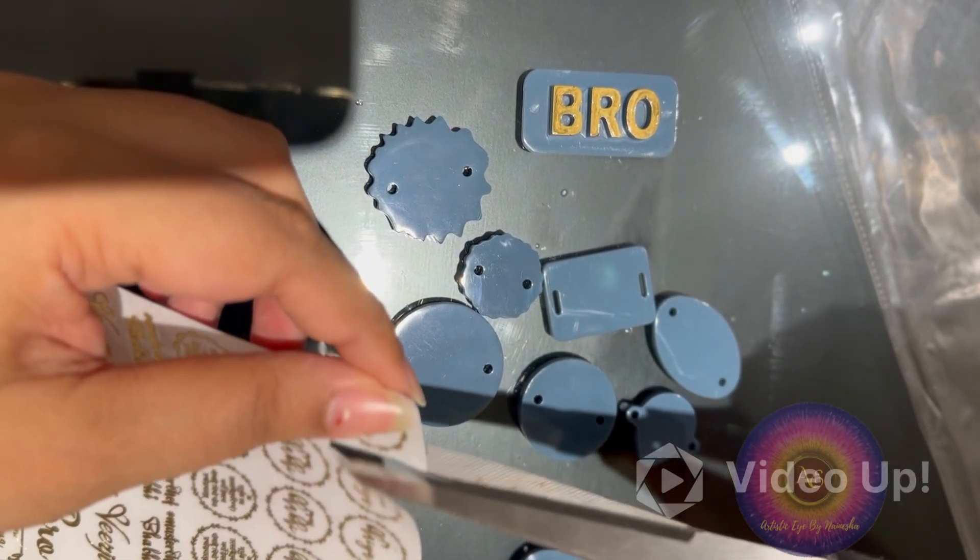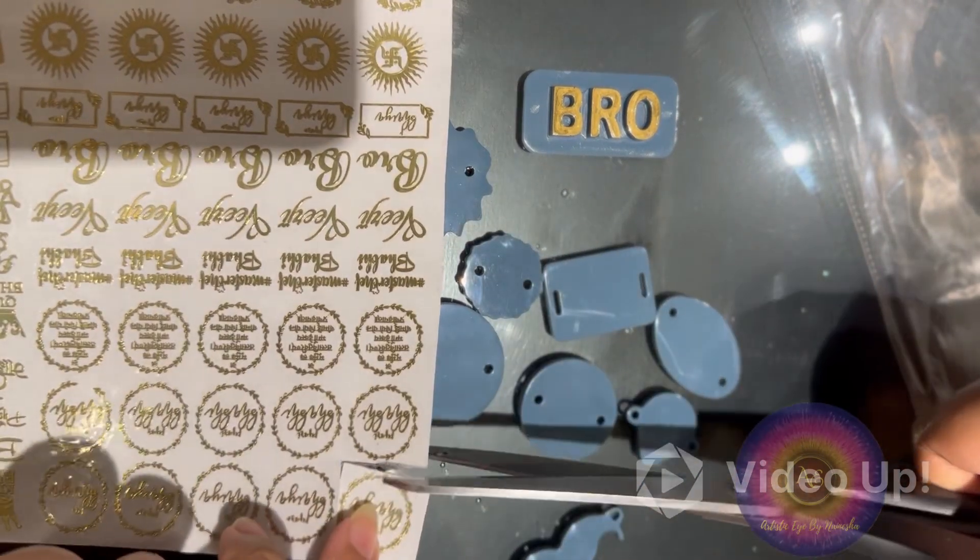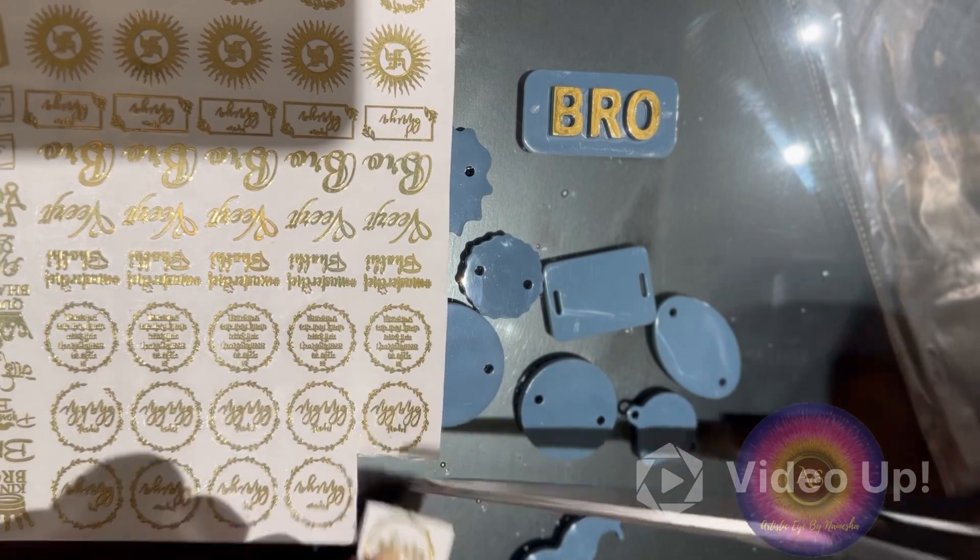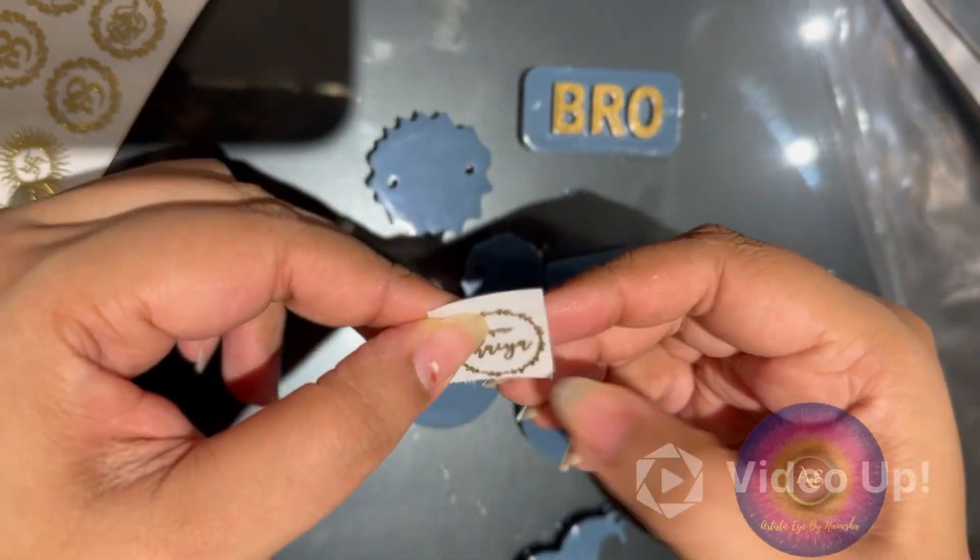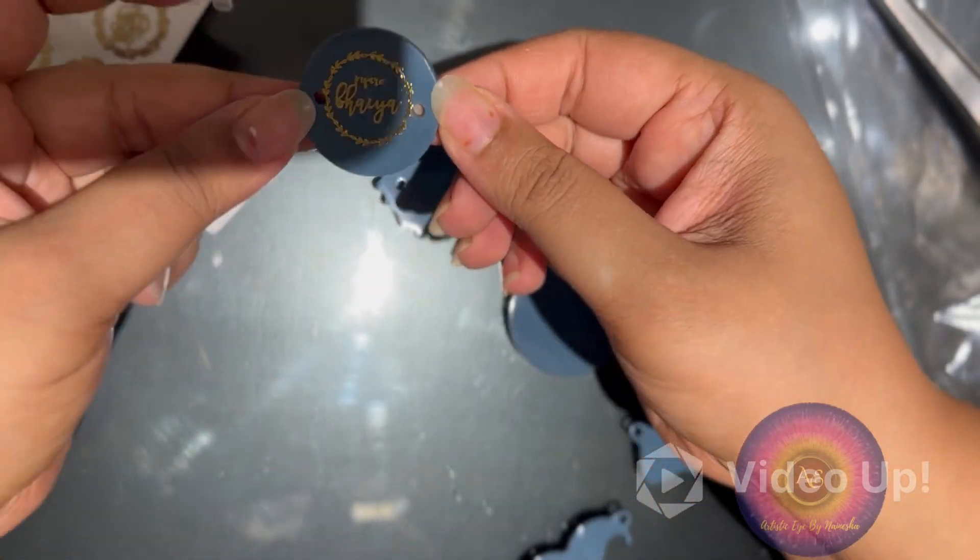I have already put up a video on how to stick the stickers, so I'll put the link in the description box and you can check that out. So we are done here. Wait for part two to see the finished look of this rakhi. See you, bye bye.